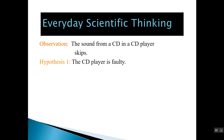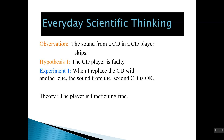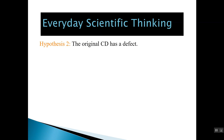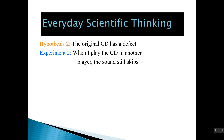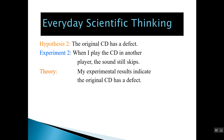To test the first hypothesis — that the CD player is faulty — you replace the original CD with another one in the same player. If the second CD plays fine without skipping, that means nothing is wrong with the CD player. You then test the second hypothesis — that the original CD has a defect — by placing it in a different player. If the sound still skips in the different player, you can conclude that the original CD is defective, and that becomes your working theory for solving the problem.